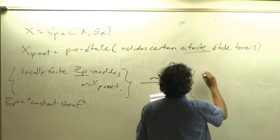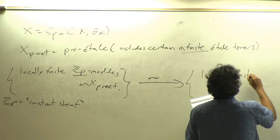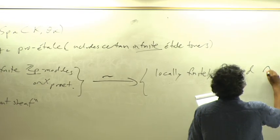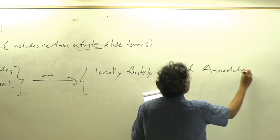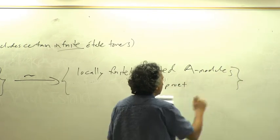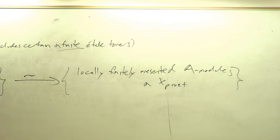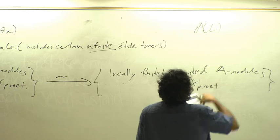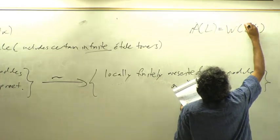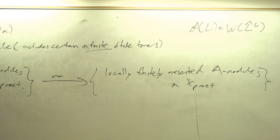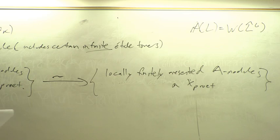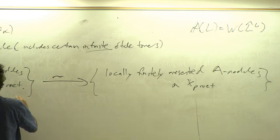These correspond to locally finitely presented modules — I'll write down another sheaf I'll call A. A is sort of the sheaf-theoretic version of W(L-hat-flat): if I think of L as being an object of this site, then the evaluation of A is W(L-hat-flat). The passage back and forth is the same: a sheaf V goes to something with a phi action. I don't need a gamma action, because the action of Gal(L/K) is incorporated into the sheaf property.